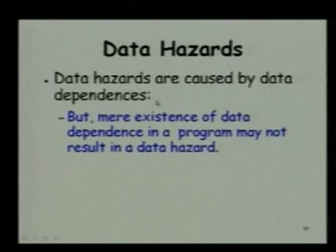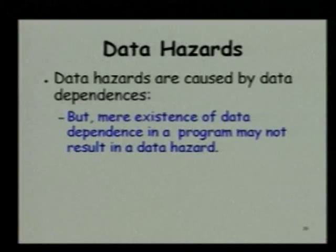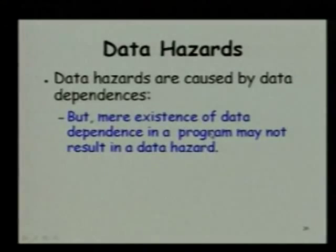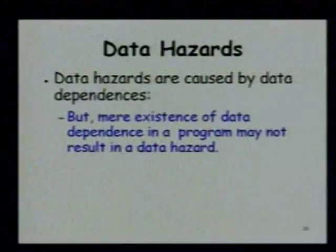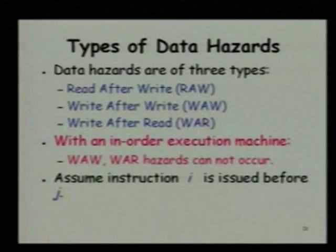We have seen that data hazards are caused by data dependencies. Various types of data dependencies: true dependency, name dependency — anti-dependency and output dependency. But the thing we should remember is that even if there is a data dependency, sometimes it may not result in a data hazard. He gives an example that instruction 1 produces data that is used by instruction 5 — there is a dependency but they do not cause a problem because they are separated. You can think of many examples where even if there is a dependence, it will not really result in a hazard.